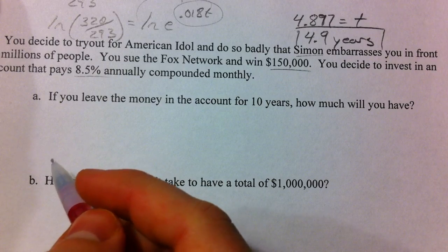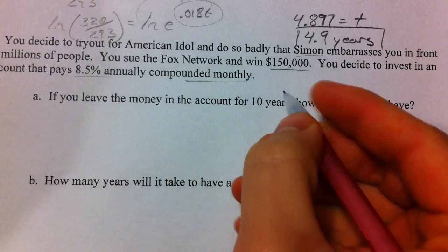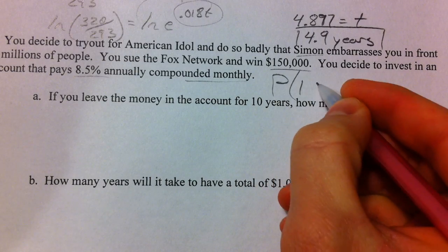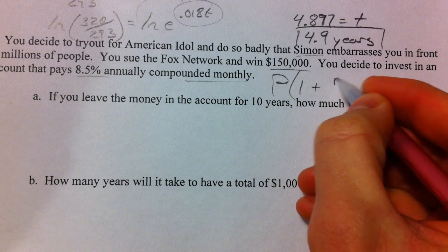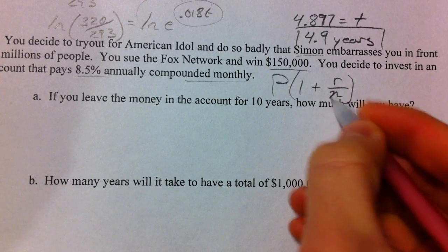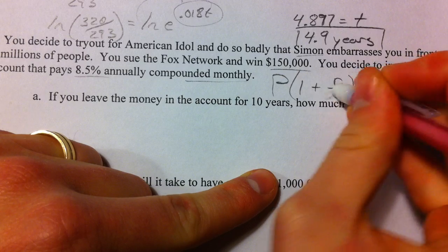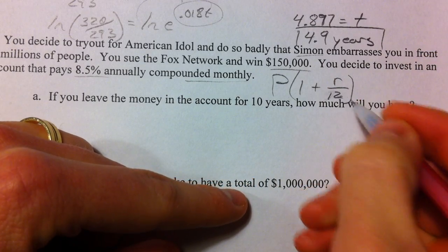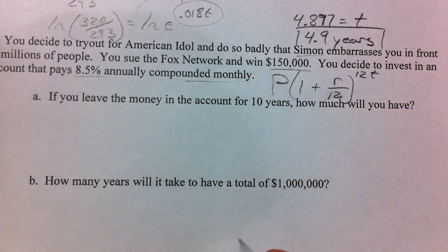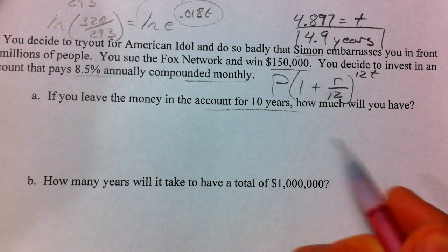It's going to pay 8.5% annually compounded monthly and so remember what that is is we've got some principle times 1 plus our interest rate but we divide that interest rate up into different parts. In our case it's going to be into months so this is going to be 12 and then we multiply it by how many months pass so 12 times however many years we have.